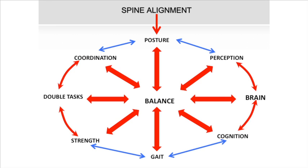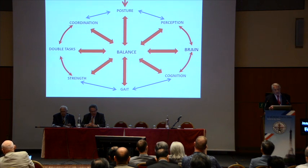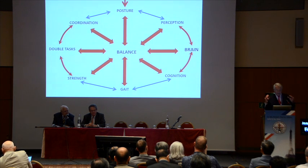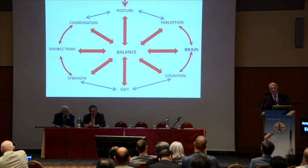In this spine alignment diagram, if you look on the left, you have things you can do — coordination, double task, strength, et cetera. But on the other side, everything depends upon what you have done on the right side for the brain to do the job it's required to do. And balance is the center of it. Spine alignment is part of it. So for that reason, spine alignment has to continue to be our most important task.